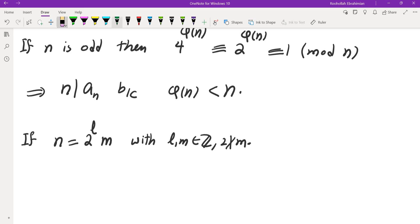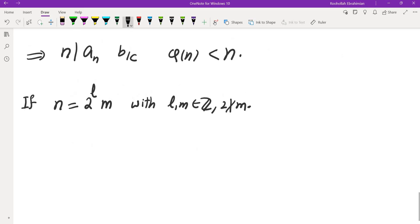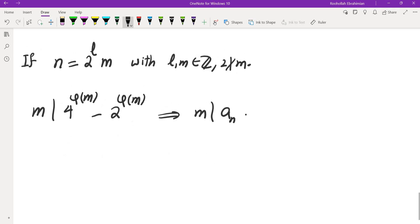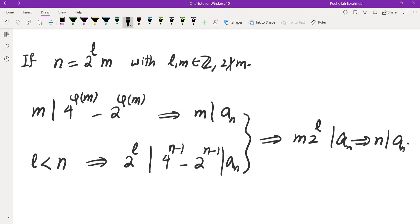Now what about if n is even? If n is even, let's write it down as 2 to the l times m with l and m integers and m odd. If that's the case, then here's what we can say. We know that m divides 4 to the phi of m minus 2 to the phi of m, and that's why m divides An. But of course, 2 to the l, since l is less than n, so that means 2 to the l divides 4 to the n-1 minus 2 to the power of n-1. It divides one of those terms. So from these two, we can deduce that n divides An, which means n divides An. And that brings you to the end of this video.